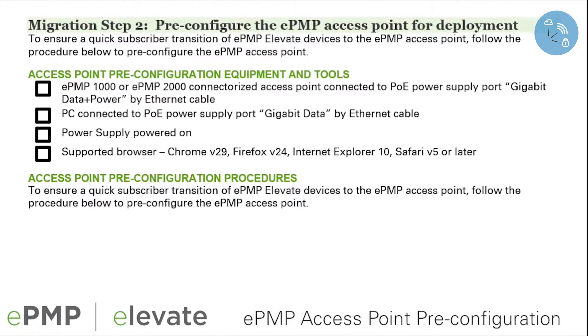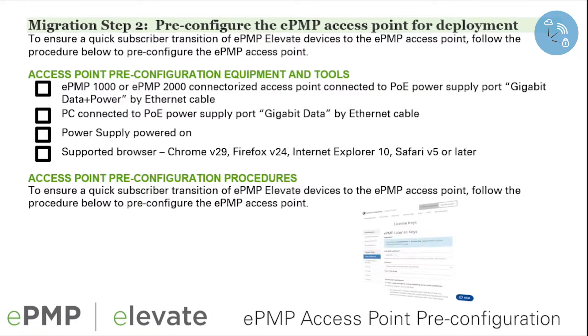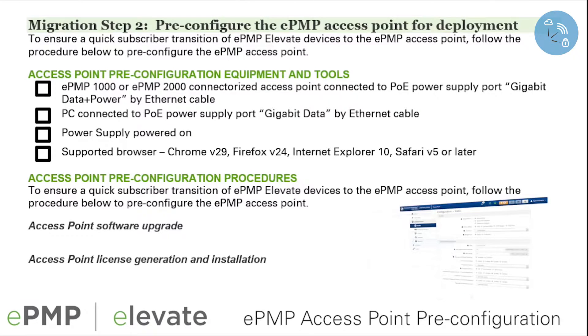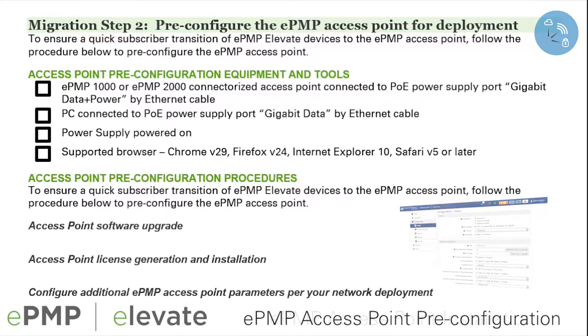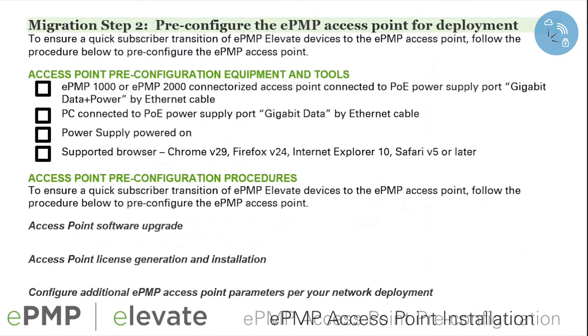Step 2 includes pre-configuration of the access point prior to deployment, including software upgrade, access point license generation and installation, and configuration of any additional parameters inherent to the original network.